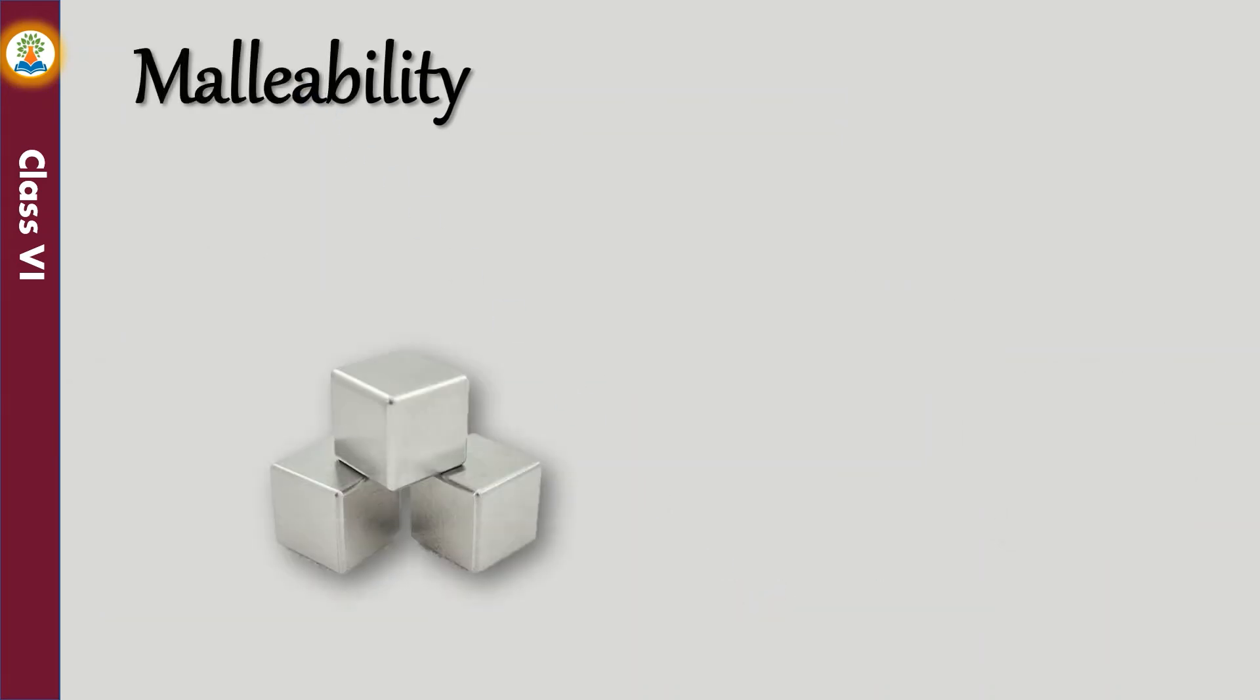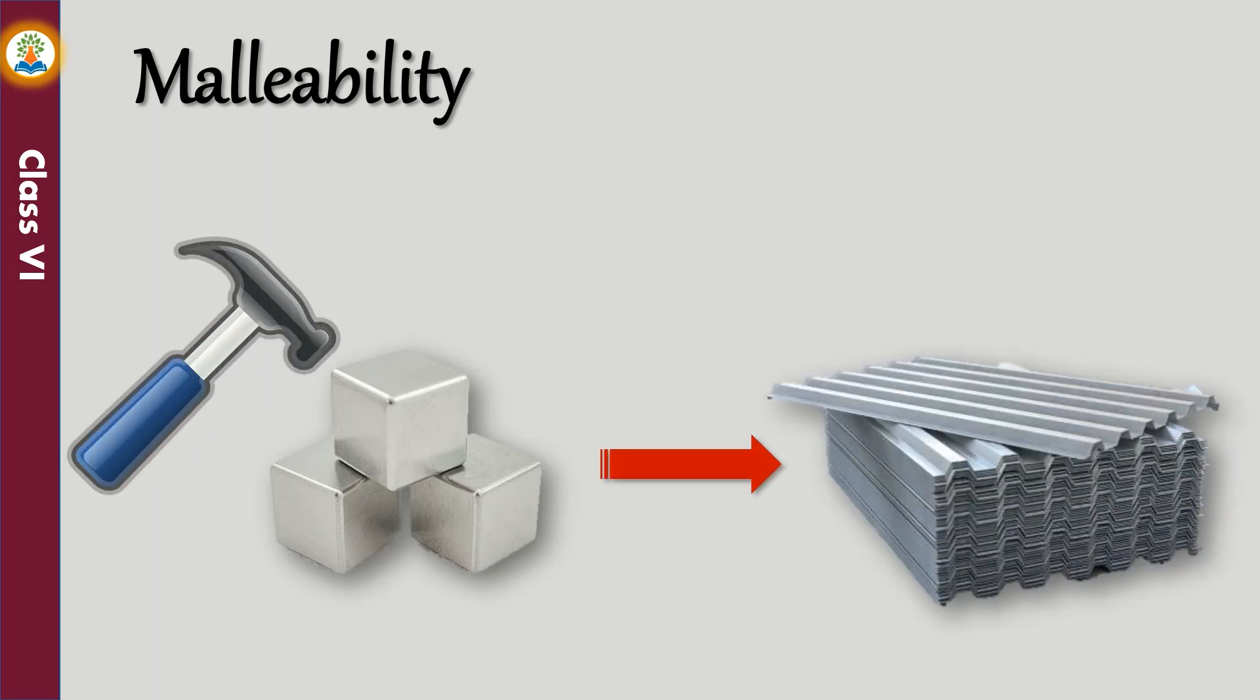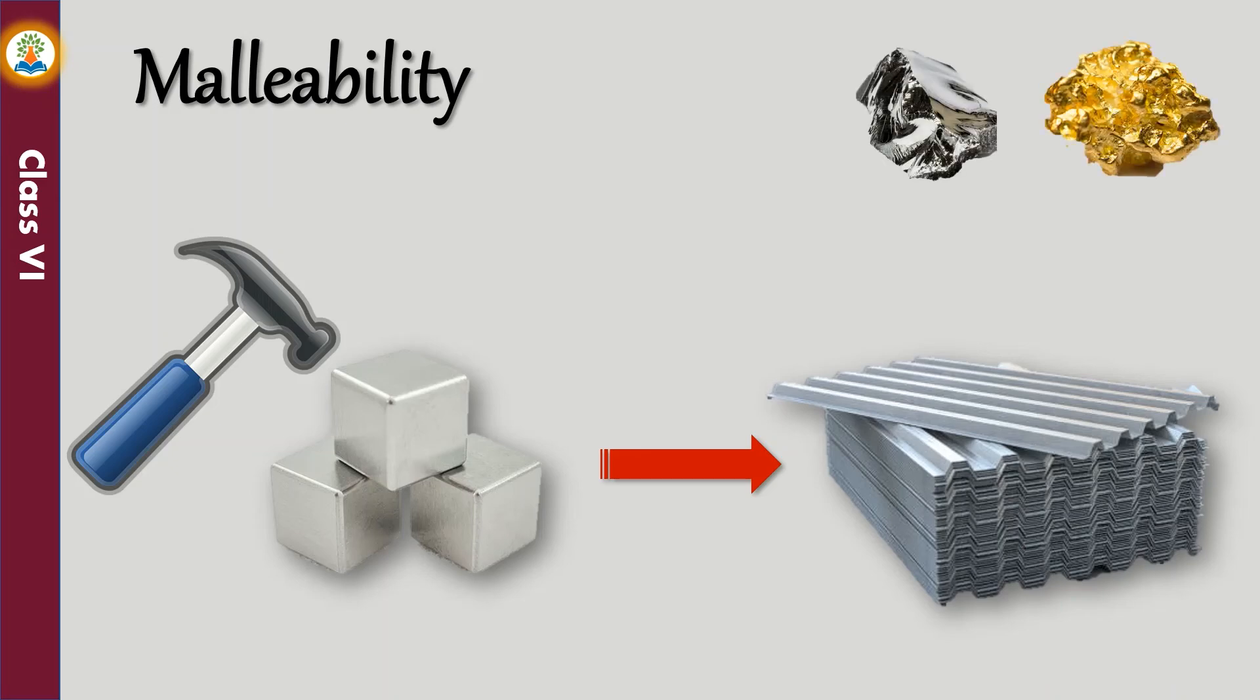Metals are malleable. They can be beaten into thin sheets with a hammer. A piece of aluminum metal turns into a thin sheet without breaking when we hammer it. Silver and gold are the examples of most malleable metals.